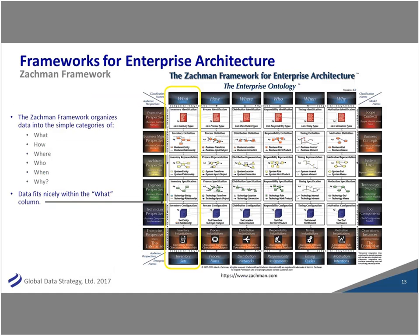When we talk about enterprise architecture itself, there are a number of different frameworks. I'm a fan of the Zachman framework for its simplicity — a lovely gentleman, John Zachman, who is regularly at Dataversity and DEMA conferences. Basically it uses the who, what, where, why, and when. If you think of enterprise architecture as the who, what, where, why, and when of the organization, the 'what' is going to be your data. The rows go from enterprise vision perspective down to business, architect, and engineer perspectives — very similar to the levels of data modeling.